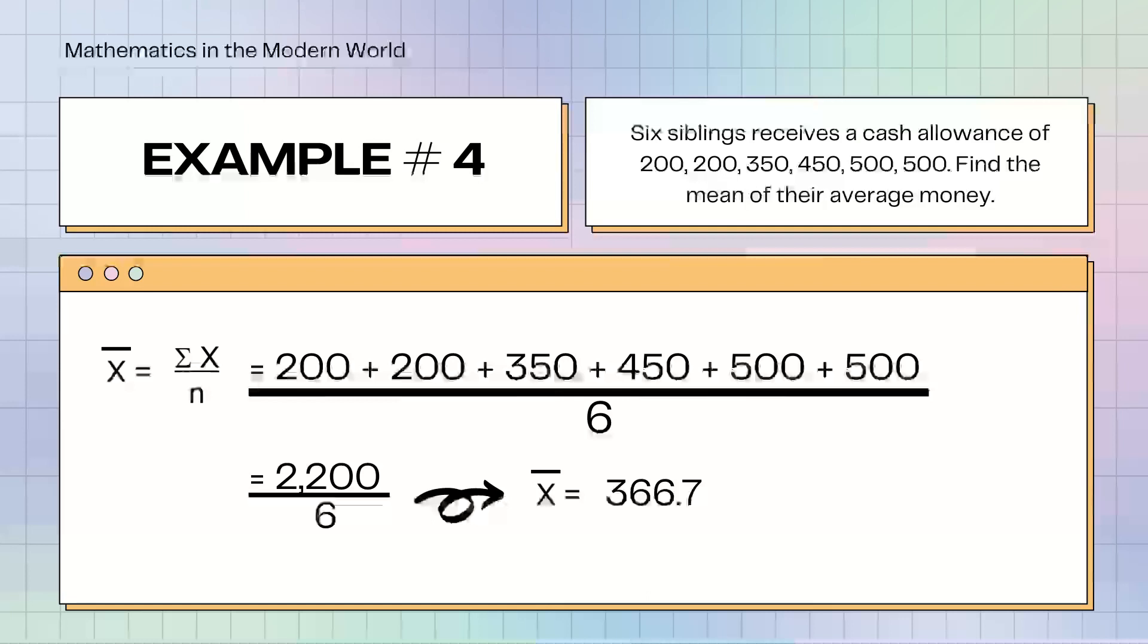Example number 4. 6 siblings receives a cash allowance of 200, 200, 350, 450, 500, 500. Find the mean of their average money. I-add natin yung nakuha nilang pera sa 6. Since 6 silang magkakapatid, it will be 2,200 over 6. Therefore, their average money would be 366.7.